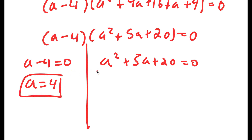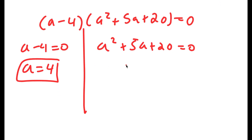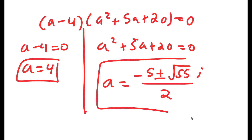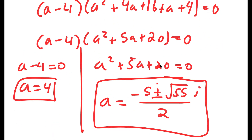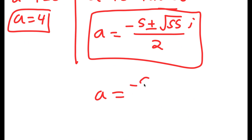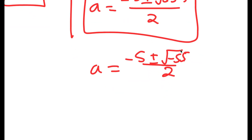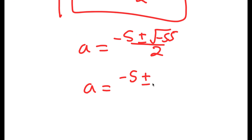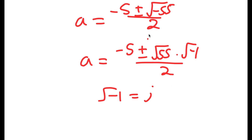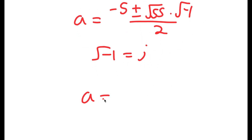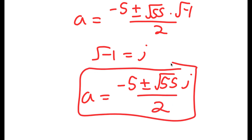For a squared plus 5a plus 20 equals 0, I'm going to use the quadratic formula. If you do end up doing it, you get a is equal to negative 5 plus or minus the square root of negative 55, all over 2. The square root of negative 55 can be rewritten as the square root of 55 times the square root of negative 1. And since the square root of negative 1 is equal to i, I get a is equal to negative 5 plus or minus the square root of 55 times i, over 2.